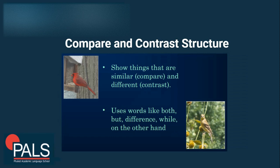Let's start with compare and contrast structure. Compare and contrast structure is commonly used when there are two objects or two things that the writer is discussing in the passage. The writer wants to show similarities — that's what we mean by the term compare — and the writer also wants to show differences, and that's where contrast enters.